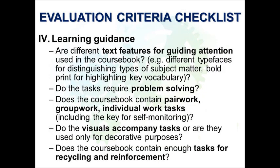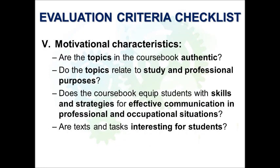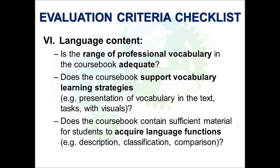The fourth category, learning guidance, contains criteria dealing with text features, visuals, problem solving tasks, pair work, group work, individual work tasks, and tasks for recycling and reinforcement. The fifth category includes motivational characteristics, where the criteria relate to the authenticity and attractiveness of topics. The sixth category, language content, includes criteria addressing adequacy of professional vocabulary, vocabulary learning strategies, and language functions acquisition.